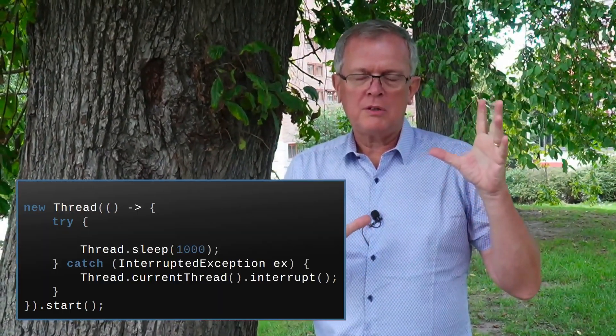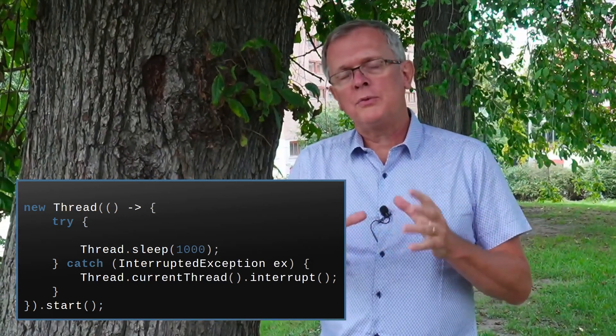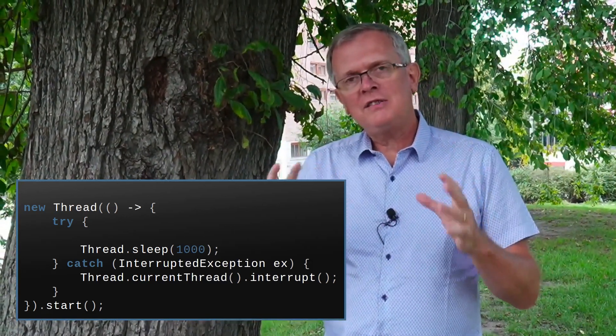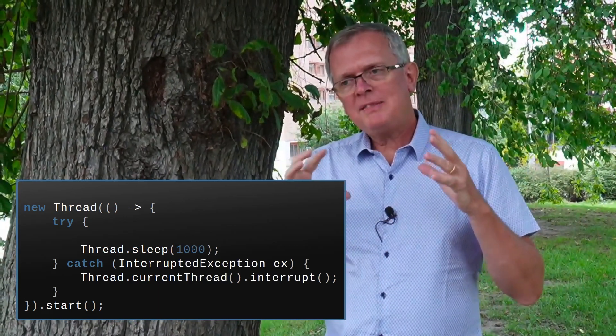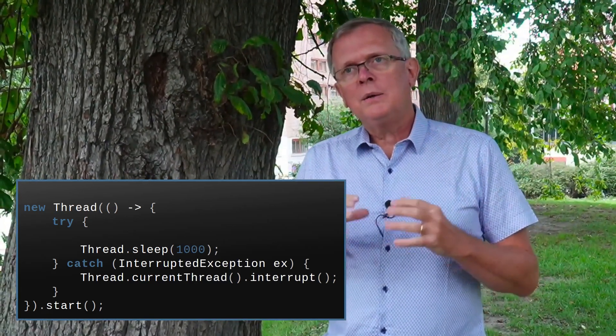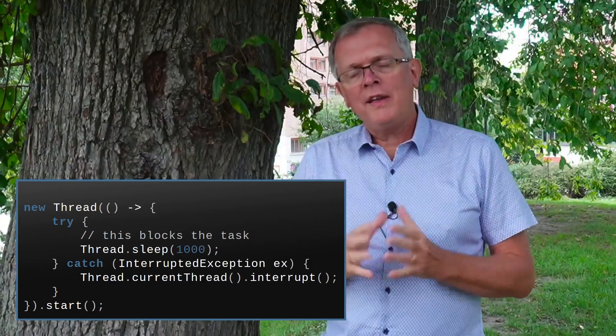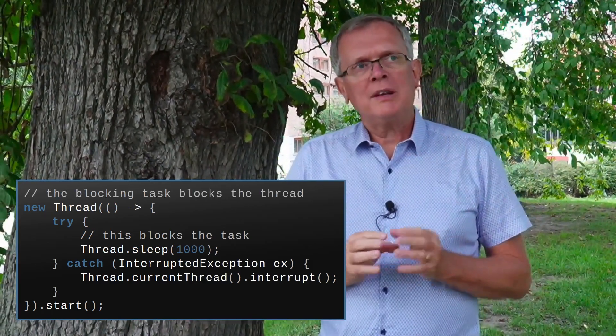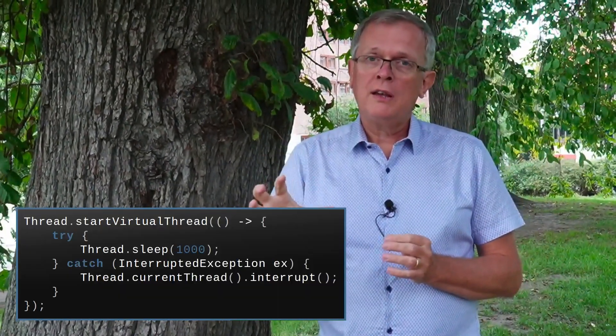The gist in concurrent programming for years in Java is that once you have submitted a task in the form of runnable or callable to a thread, you cannot detach this task from this thread. Whenever your task is blocking, then the thread is blocked. Either you have to interrupt the thread or the task has to complete, normally or exceptionally. With Loom, things are different.